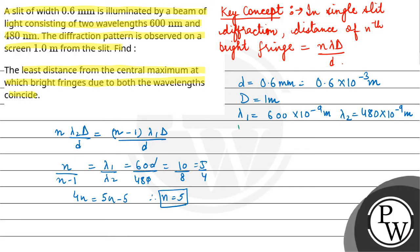So the least distance is 5 into lambda 2, which is 5 into 480 into 10 raised to the power minus 9. We use lambda 2 because lambda 2 gives the nth fringe and lambda 1 gives the n minus 1th fringe.